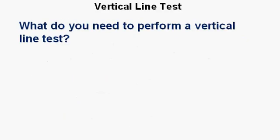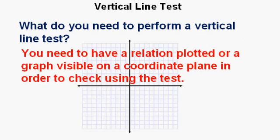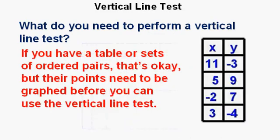What do you need to perform a vertical line test? First, you'll need to have a relation plotted or a graph visible on a coordinate plane in order to check using the test. If you have a table or set of ordered pairs, that's okay, but these points need to be graphed before we can use the vertical line test.